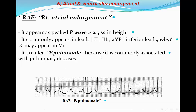It is called P pulmonale — an old term because it was commonly associated with pulmonary diseases. In this example, this is a big P wave; if you calculate, it is almost three small squares in height. This is right atrial enlargement, or P pulmonale.